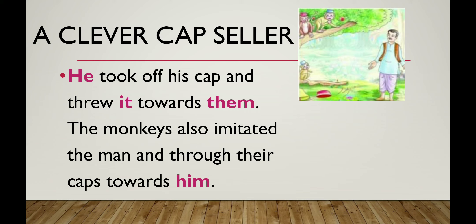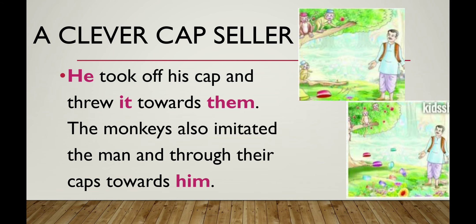He took off his cap and threw it towards them. Who took off? The cap seller — we use 'he.' What did he throw? The cap — we use 'it.' Towards whom? The monkeys — we use 'them.' So the answer is: he took off his cap and threw it towards them. The monkeys also imitated the man and threw their caps towards him.